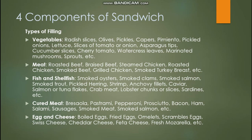For fish fillings, examples include smoked oysters, smoked clams, smoked salmon, smoked trout, pickled herring, shrimp, anchovy fillets, caviar, salmon or tuna flakes, crab meat, lobster chunks or slices, and sardines. For cured meats, examples include bresaola, pastrami, pepperoni, prosciutto, bacon, ham, salami, sausages, smoked meat, and locally in the Philippines, chorizo or longaniza.